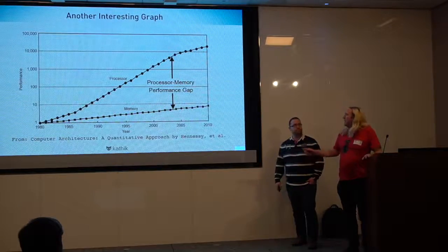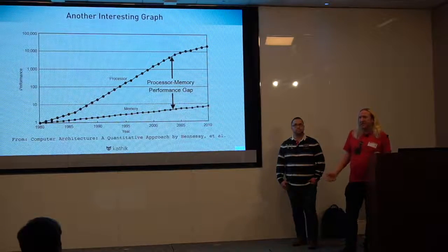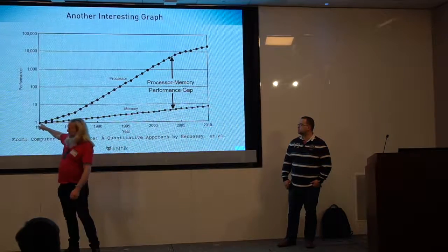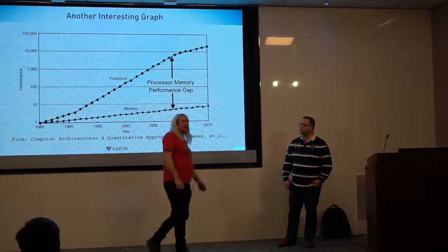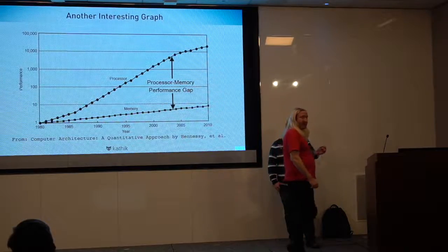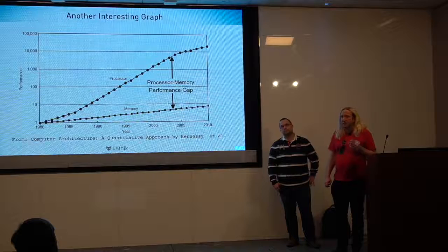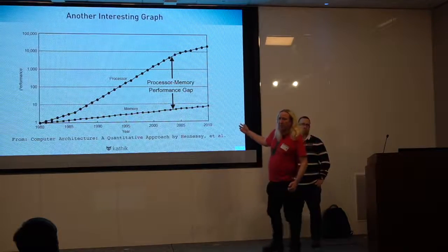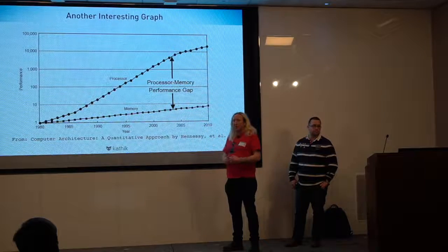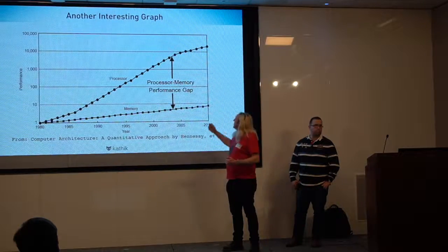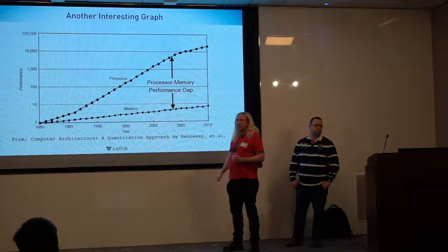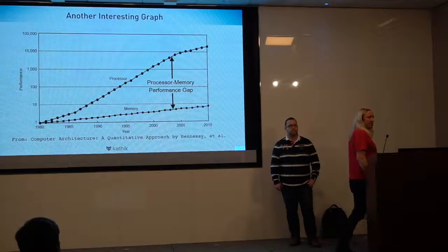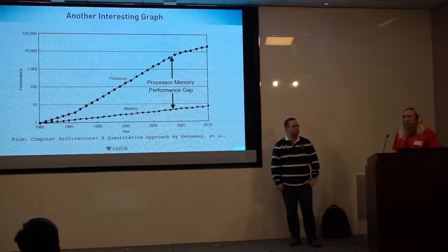The units of processor and memory speed are not the same, so look at where the two lines cross at point one back in 1980. What that means is that in 1980, a memory access instruction on a processor is no slower to dispatch than an arithmetic operation. By 2010, memory has got 10-fold faster, but processor transistor count has increased 10,000 times — creating a very sharp differential between dispatch time of a memory access versus an arithmetic operation.